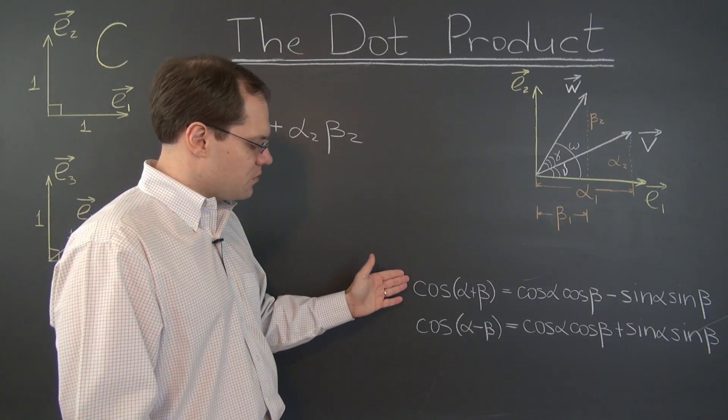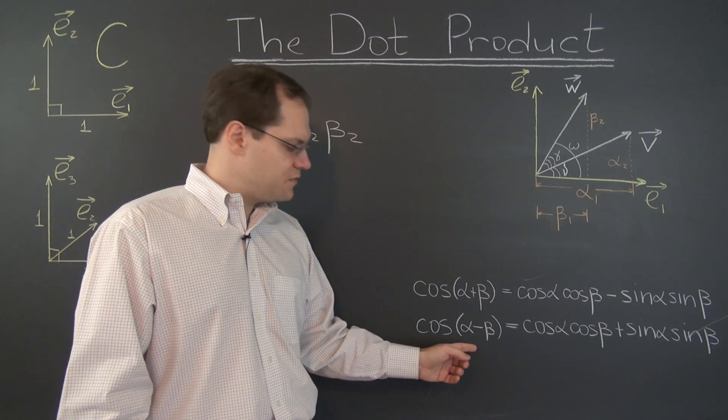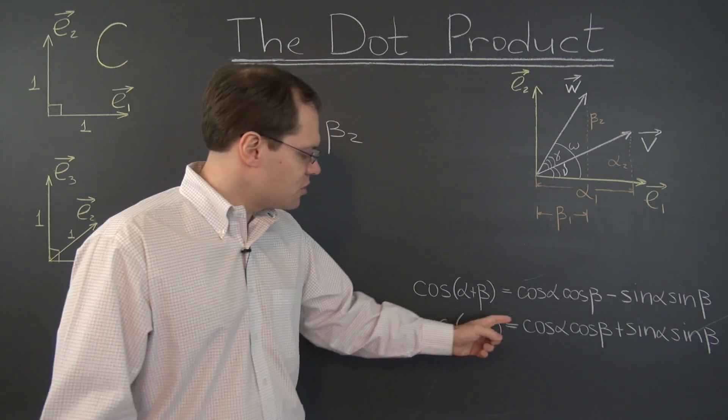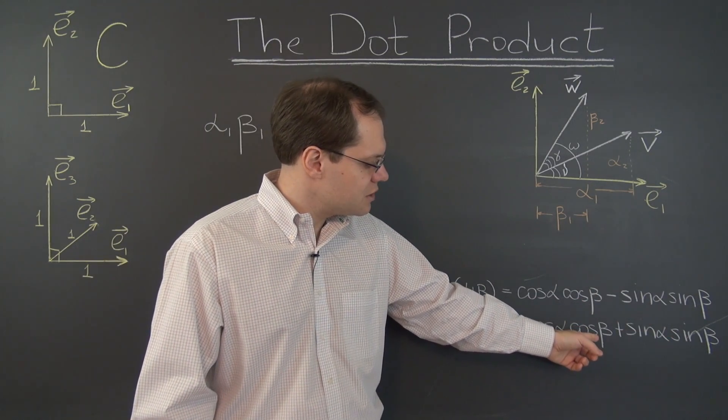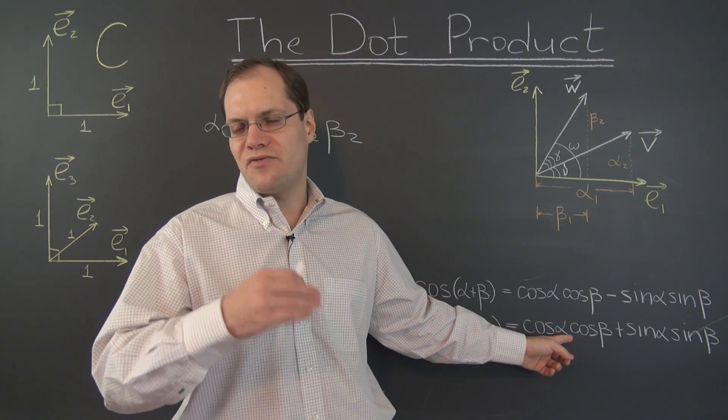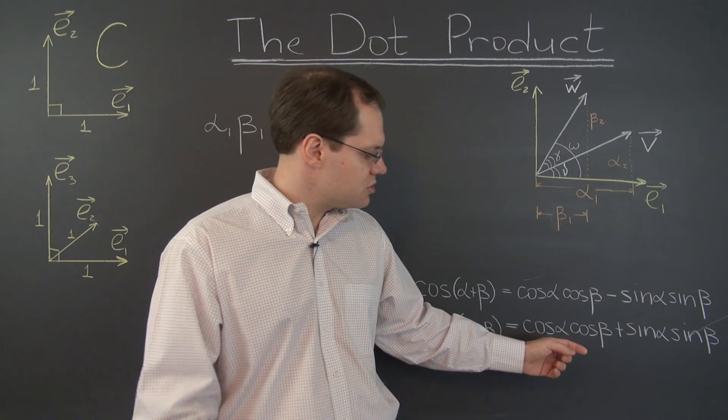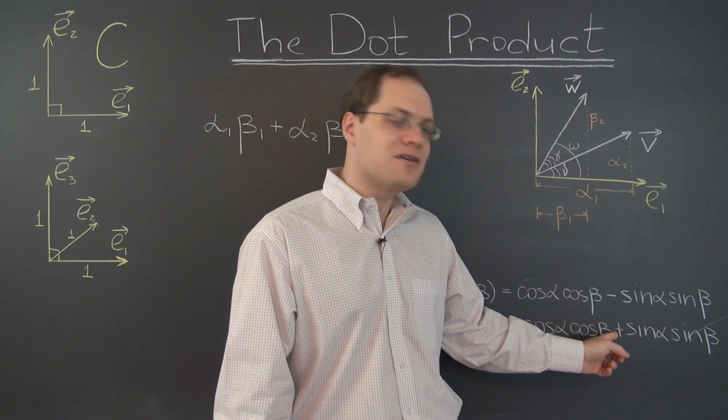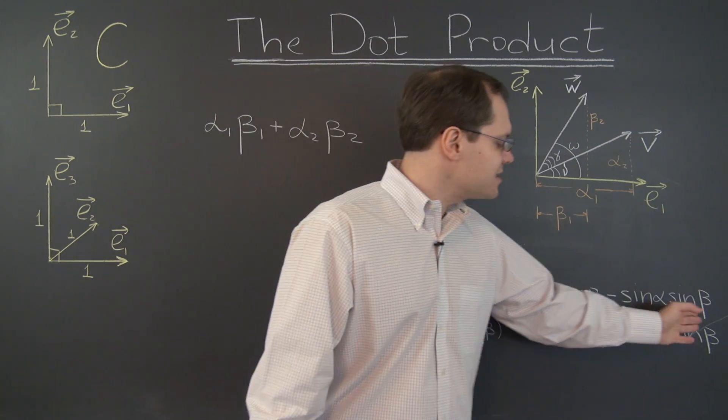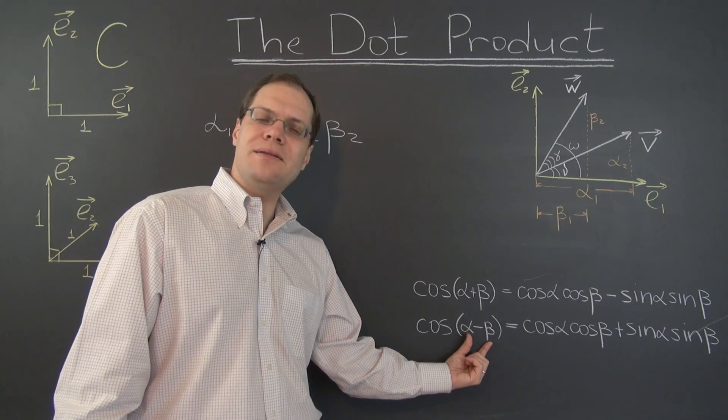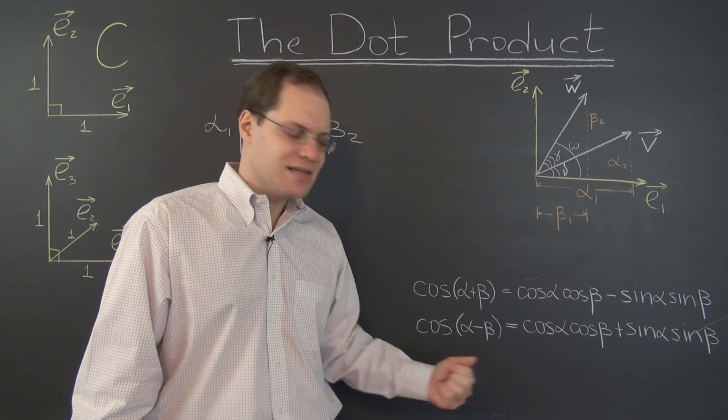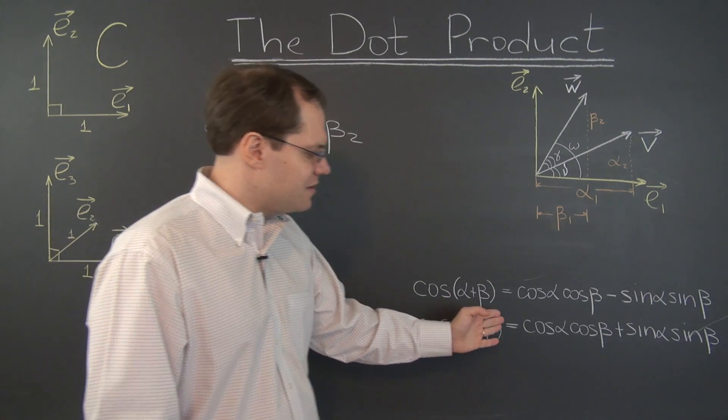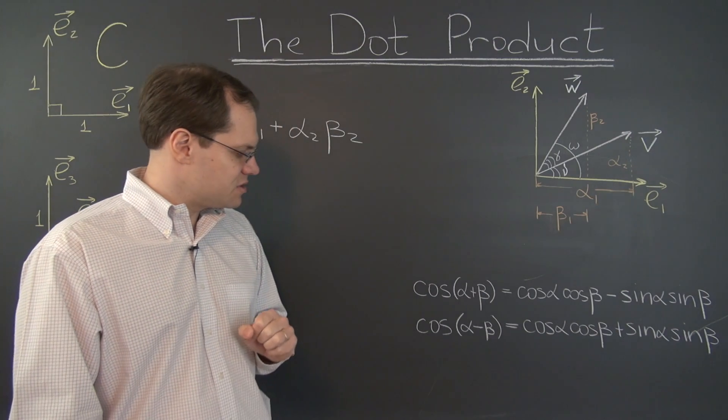So given this formula, we can derive the formula for the cosine of the difference. We just have to put minus in front of all the betas. And of course, when you put minus in front of the beta under the cosine, nothing happens. Cosine of minus beta equals cosine of beta. But sine goes from plus to minus, so instead of a minus here, there is a plus here. And it would be the exact same right hand side for the same reason if we had beta minus alpha instead of alpha minus beta. So cosine of beta minus alpha equals the exact same expression.